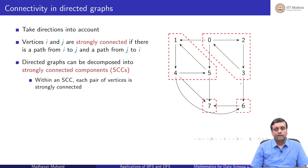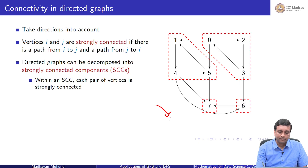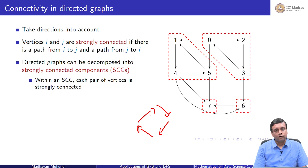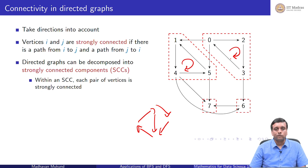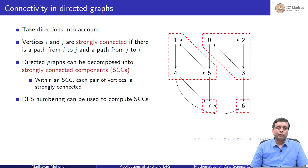For 3 vertices, a strongly connected component is essentially a directed cycle. In this graph, vertices 1, 4, 5 form a cycle and vertices 0, 2, 3 form a cycle. But vertices 7 and 6 are isolated — 7 has no outgoing edges so you cannot leave it, and 6 cannot be returned to. So the strongly connected components are those marked in red. The DFS numbering can also be used to compute these strongly connected components, though that will be covered later.